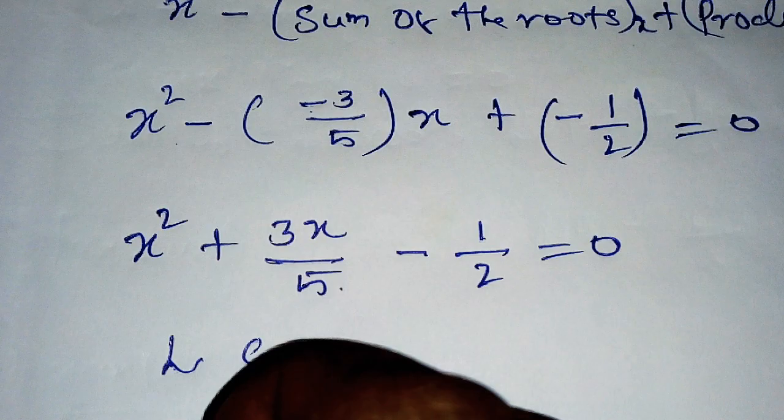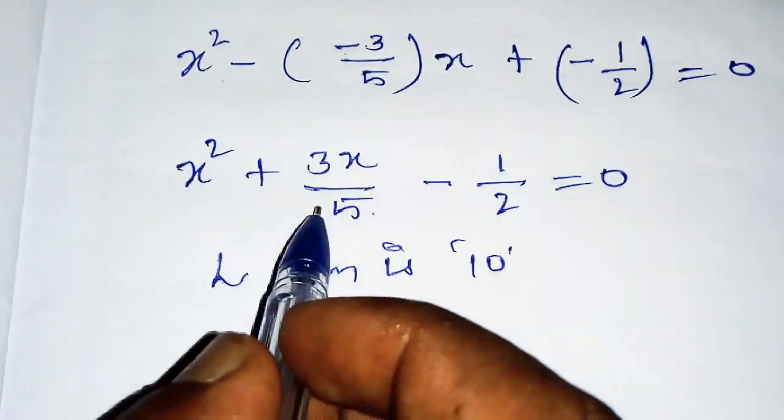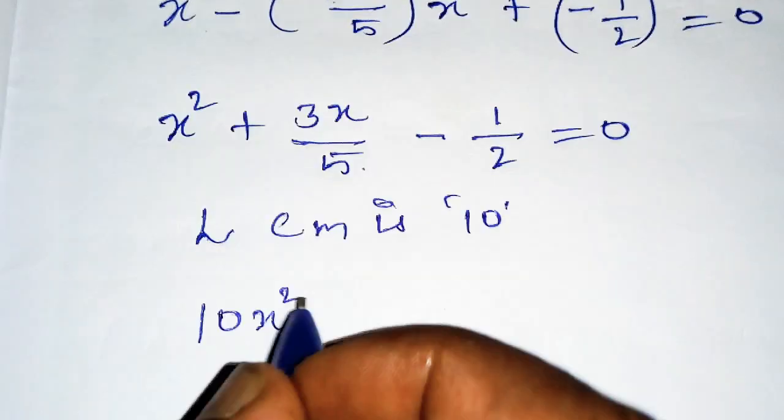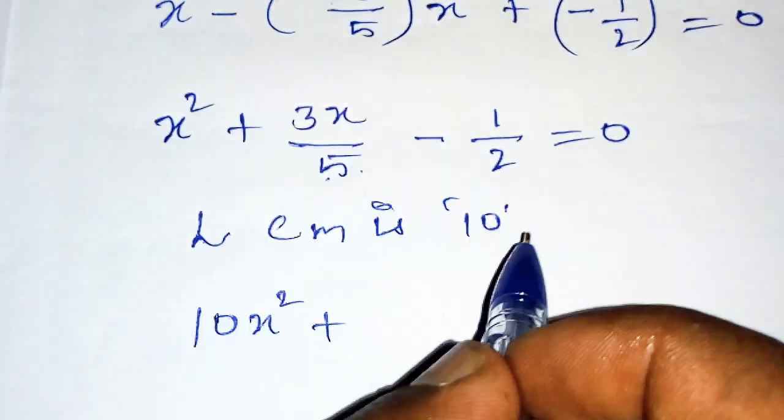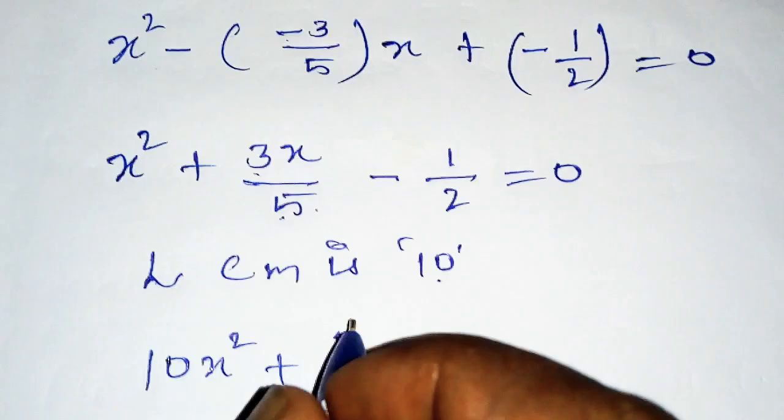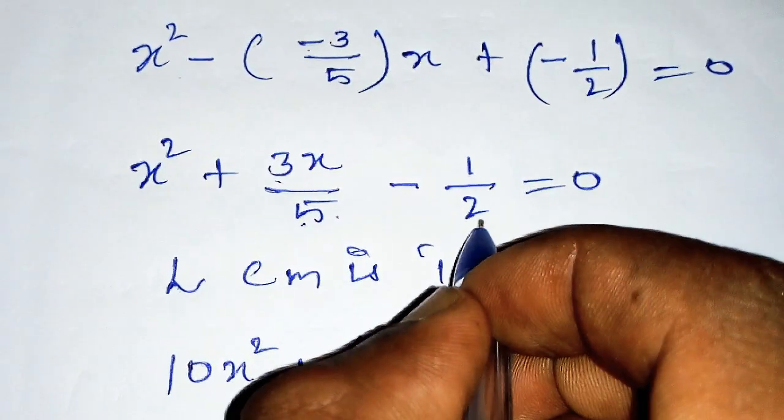Take the LCM, which is 10. Multiplying through: 10x² plus... 2 times 3 is 6x, minus 5...